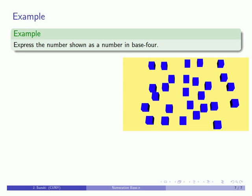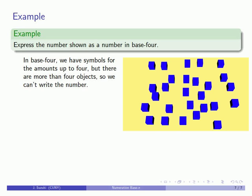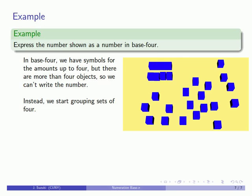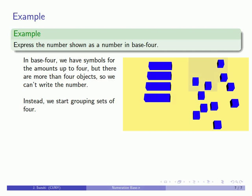But let's take a look. So let's see if we can express a number as a number in base 4. So in base 4 we have symbols for the amounts up to 4 but there's more than 4 objects in this mess so I can't write down the number of objects using a single symbol. And so what we're going to start doing because we're working in base 4 we're going to start by grouping sets of 4. So here's a set of 4, and another set of 4. Here's another set of 4. Here's another set of 4, and another set of 4.